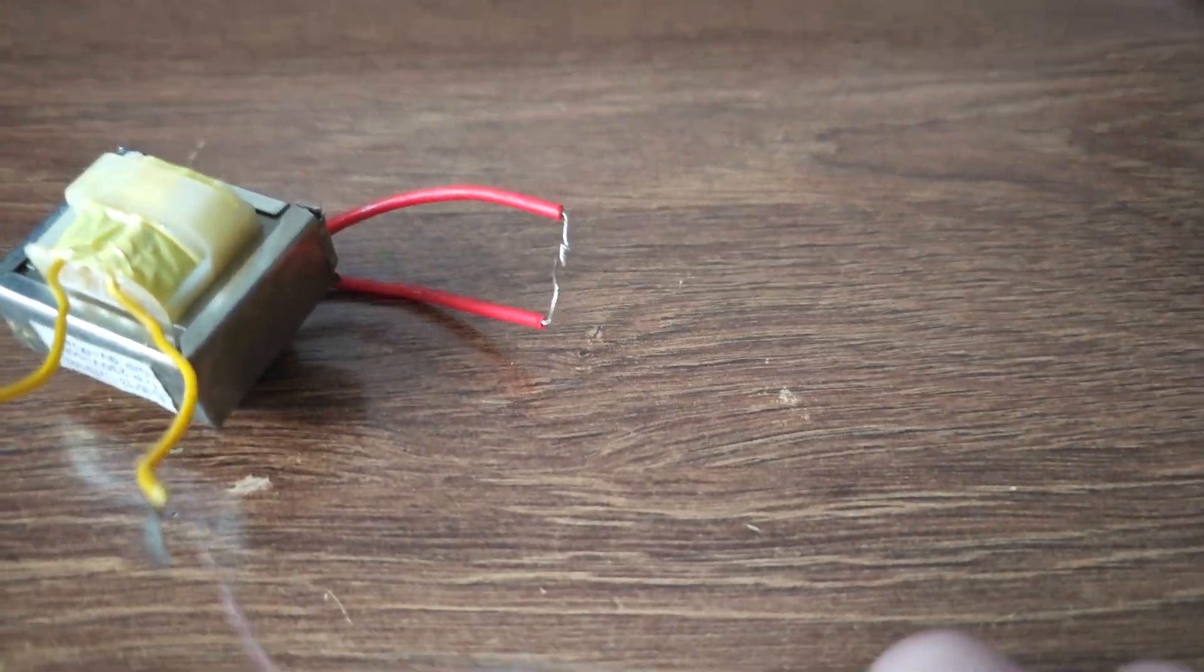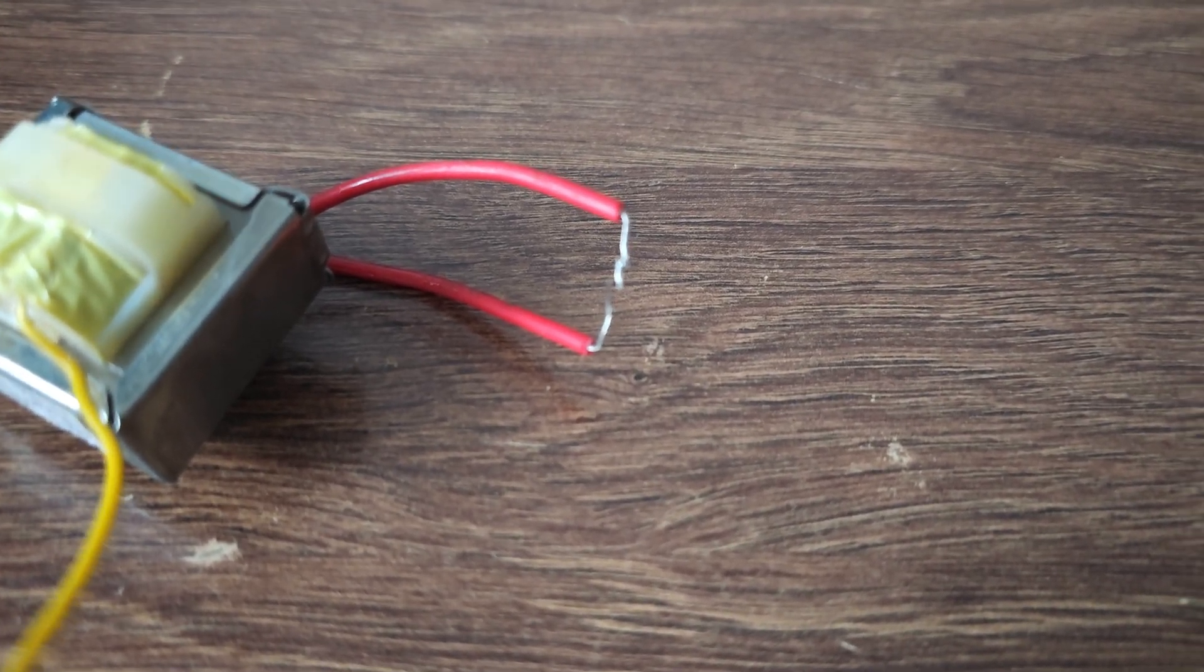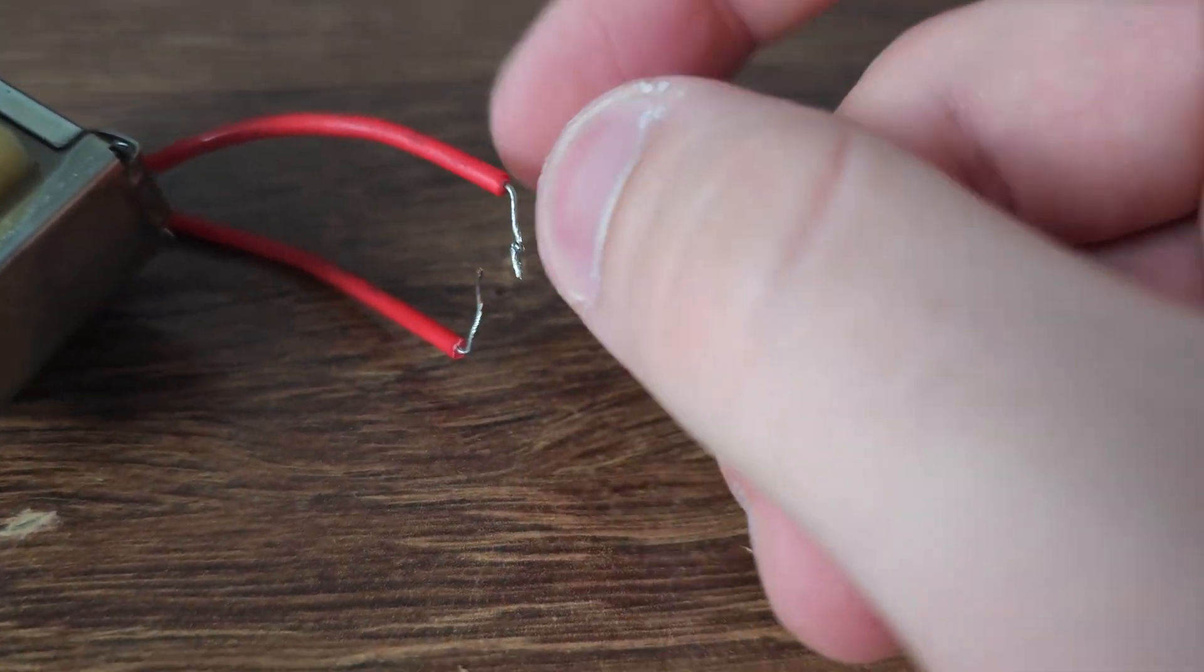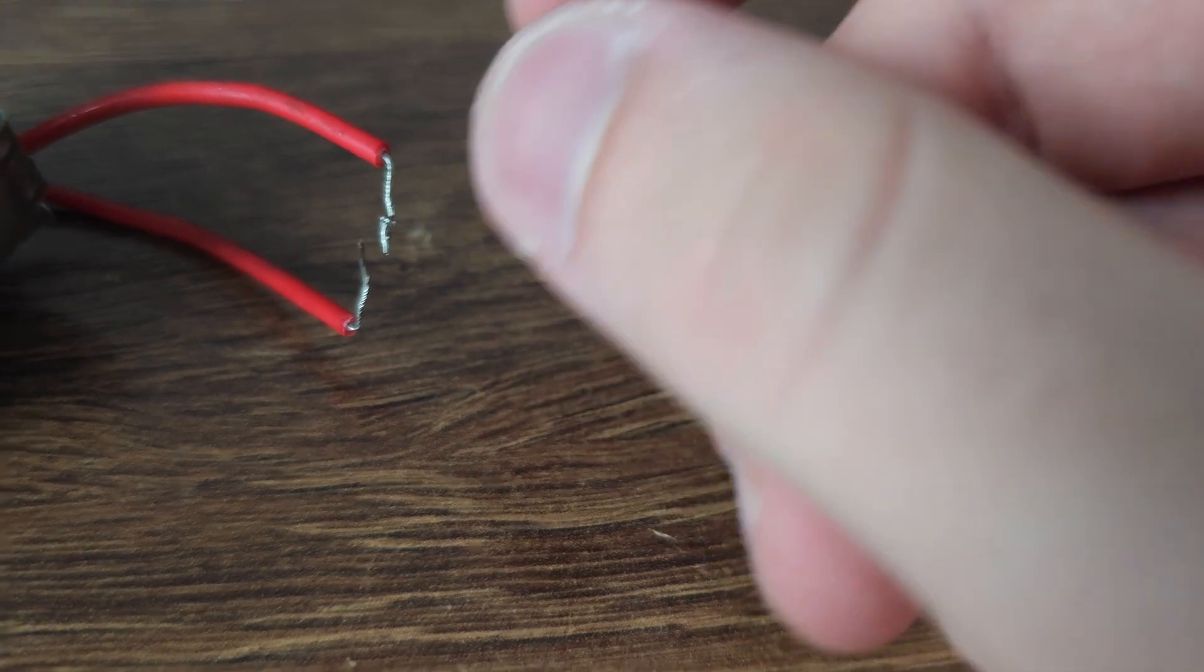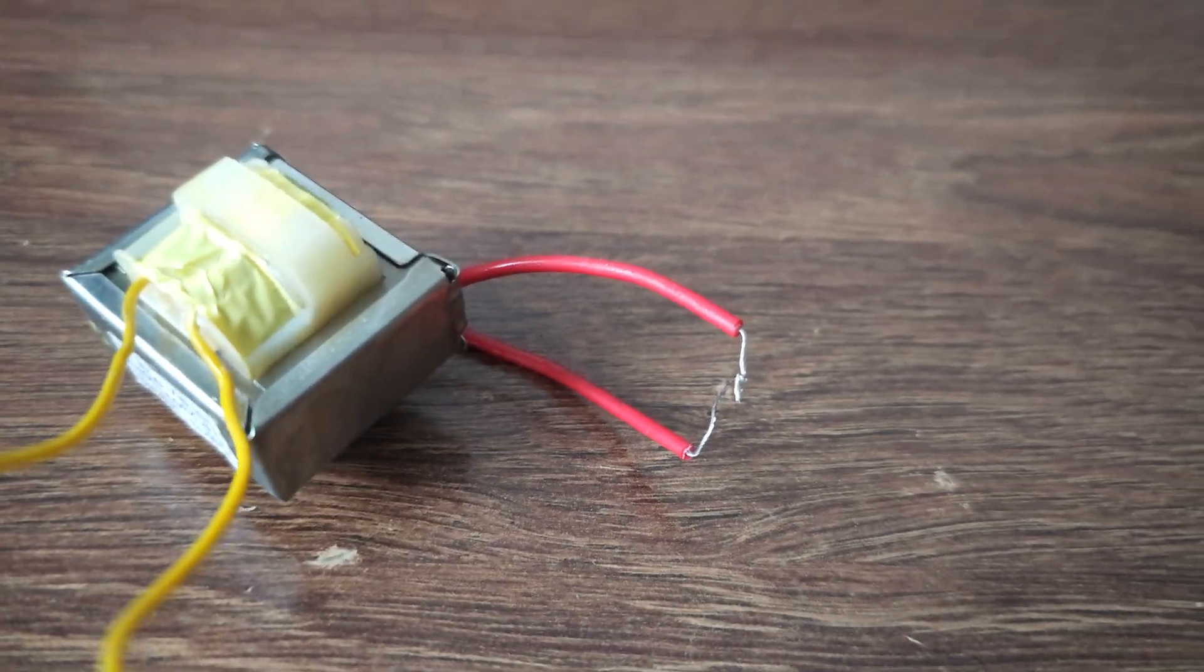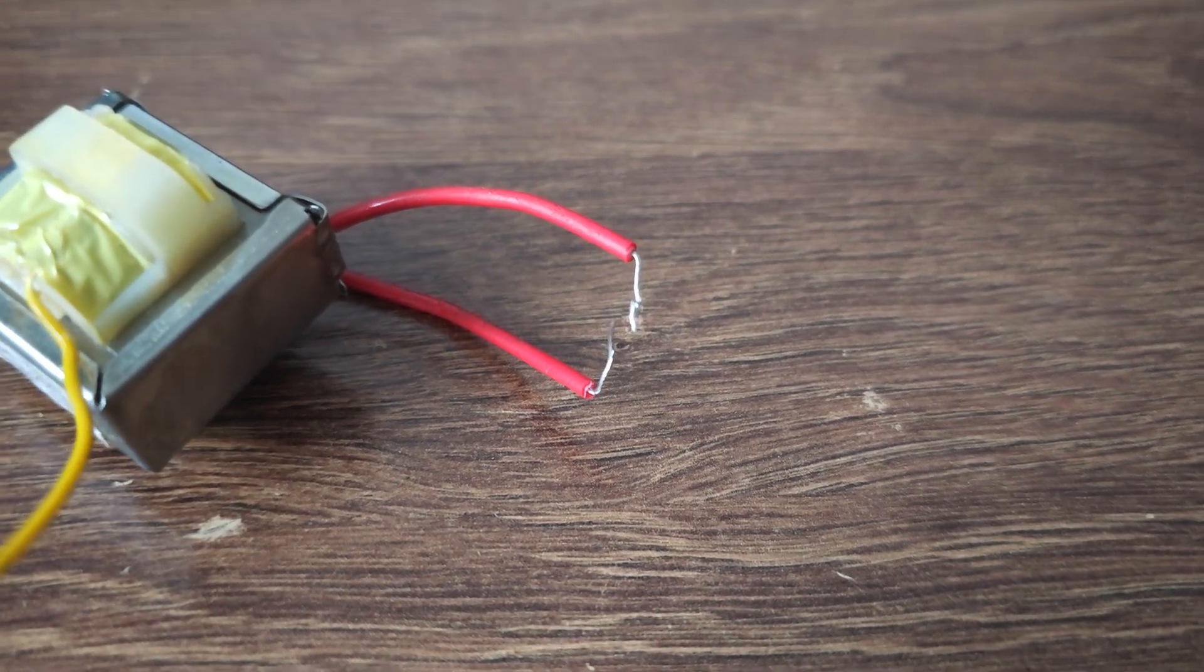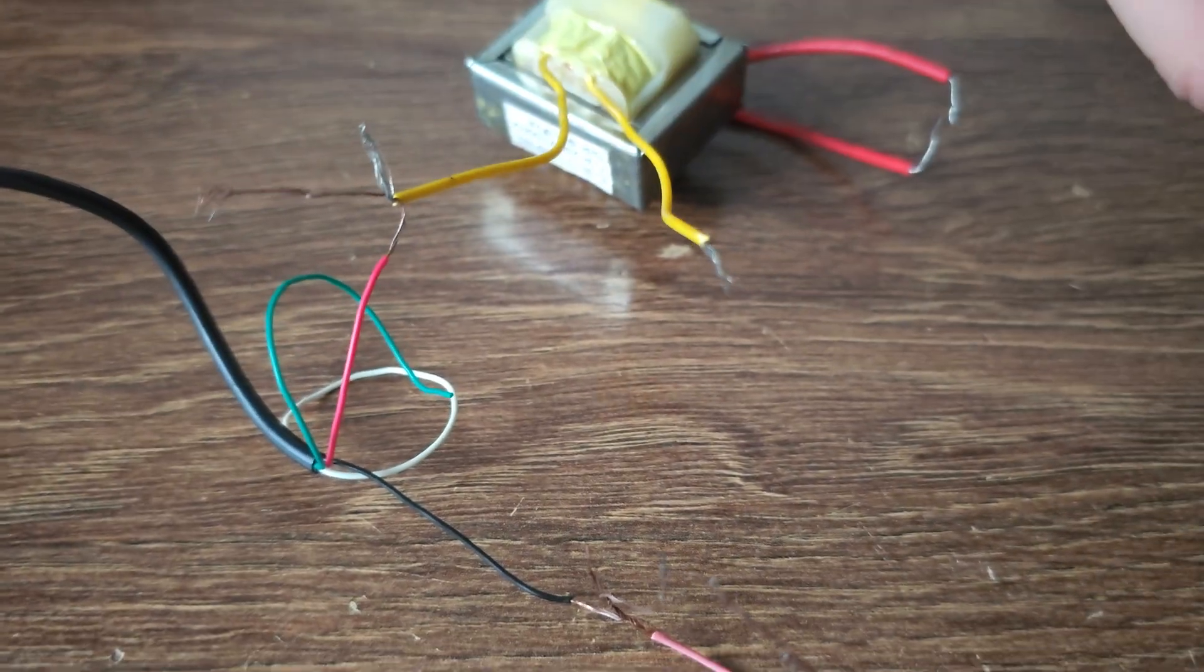As you can see here it creates small sparks, but if I create a longer distance, the sparks are bigger. I don't know what voltage this has. When I do this, normally this is a short circuit through the secondary coil from the transformer.